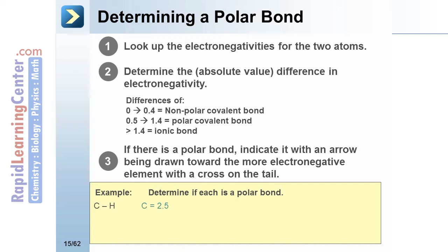For example, determine if a carbon-hydrogen bond is polar. The electronegativity for carbon is 2.5. Hydrogen is 2.1. The difference is 0.4. This is a nonpolar bond.